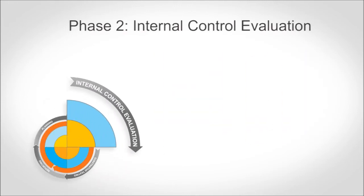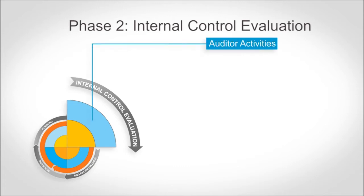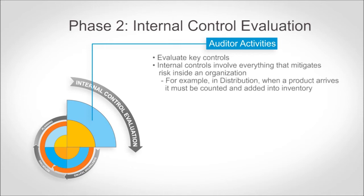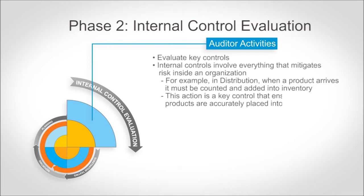In Phase 2, the Internal Control Evaluation Phase, auditors evaluate key controls in place within the business processes. Internal controls involve everything that mitigates risk within an organization — a control is the means by which an organization's resources are directed, monitored, and measured. For example, in distribution, when product arrives in a warehouse, it must be counted and added into inventory. The act of counting and recording this information is a key control to ensure that product is accurately input into the system.